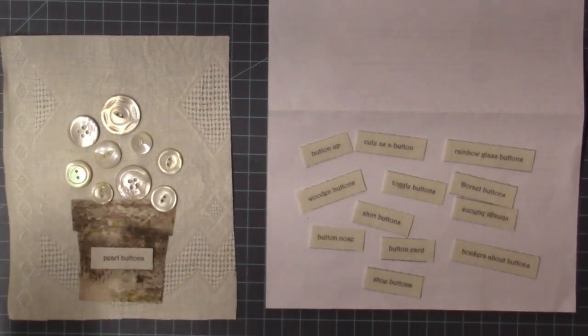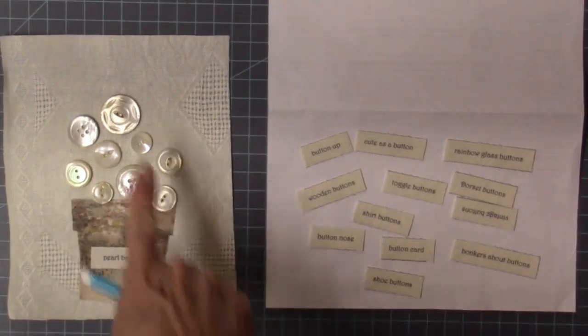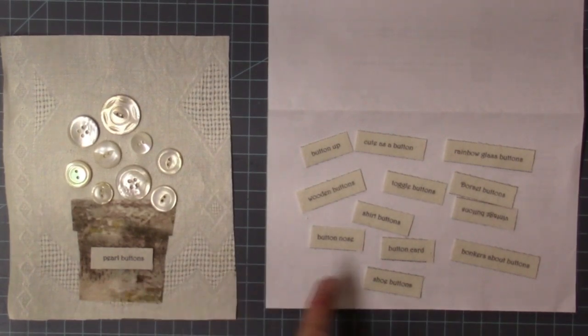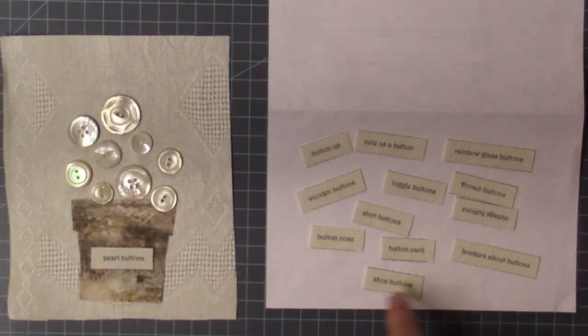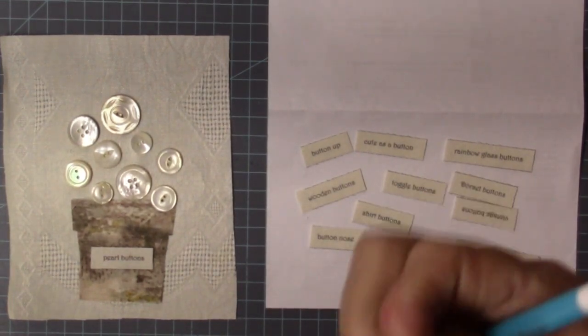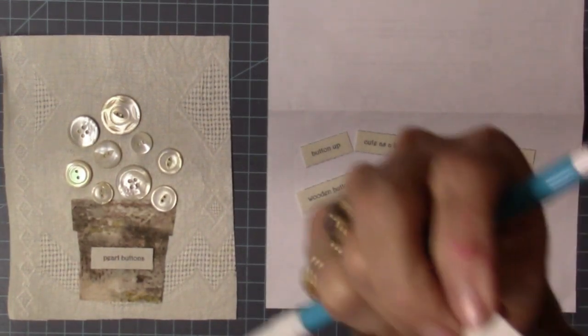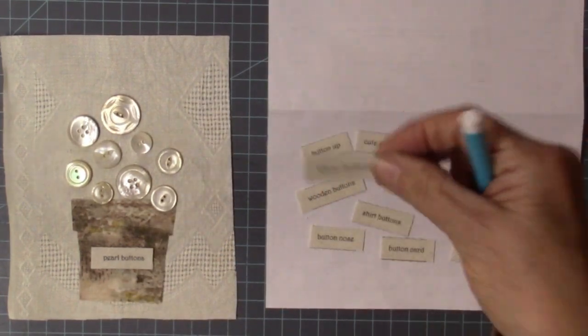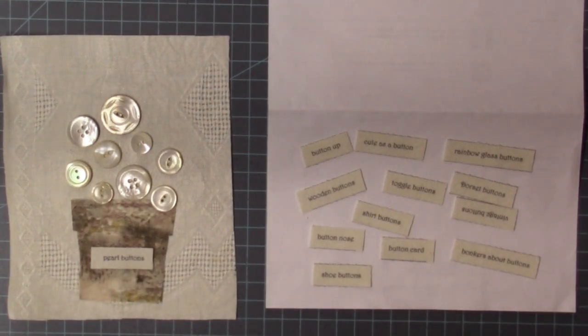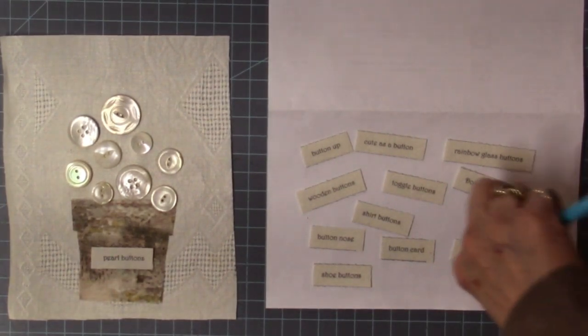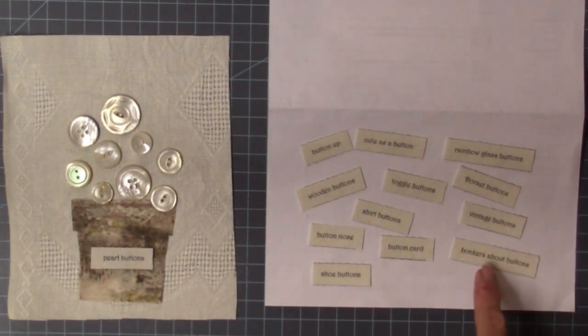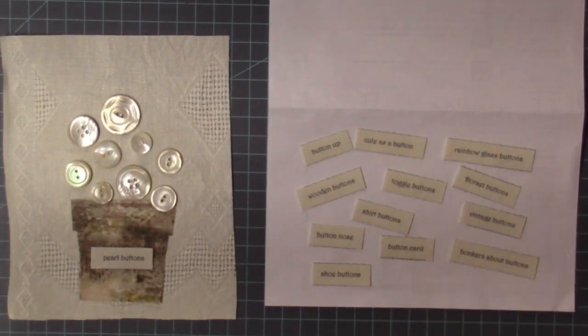For my next little page, I'm going to do all white mother of pearl buttons and I got these little muslin pieces. I think she just has interfacing on the back and I got those from Simple Life Stitches off of Etsy. There's vintage buttons, dorset buttons, rainbow glass buttons, toggle button shirt, wooden button up, cute as a button, bonkers about buttons. That would be me.